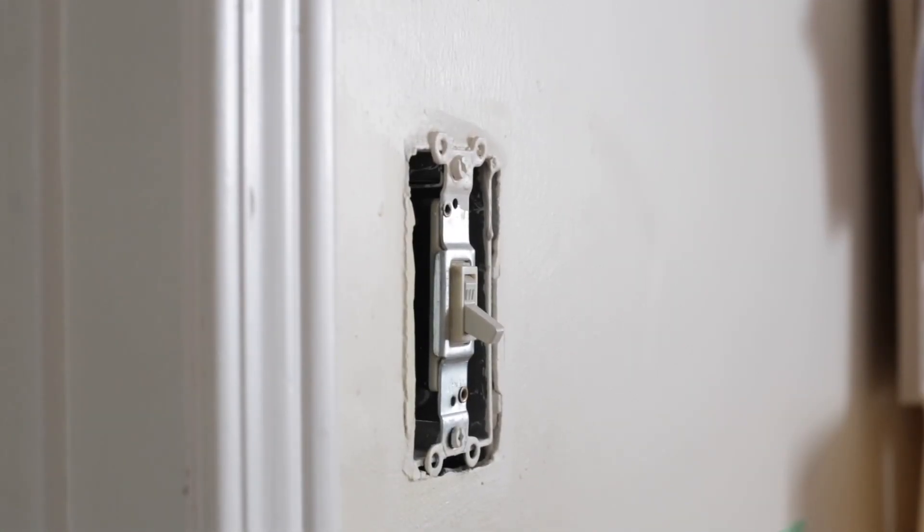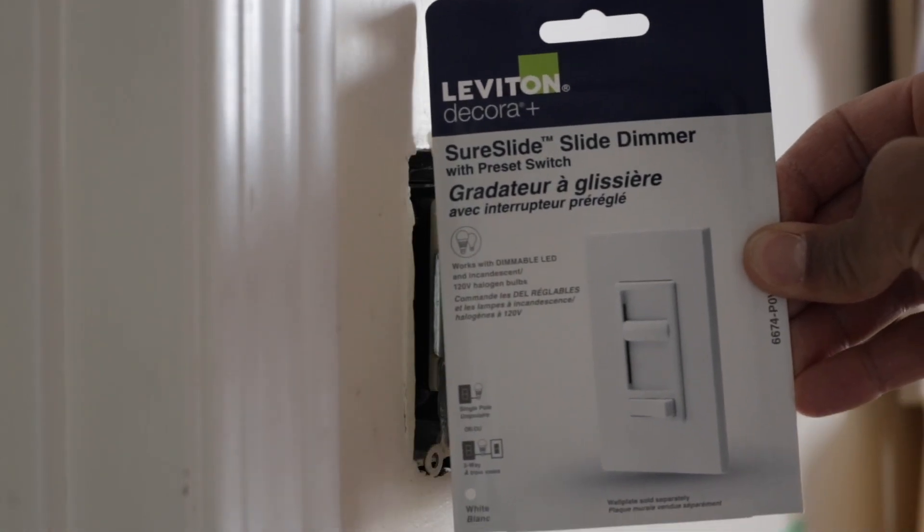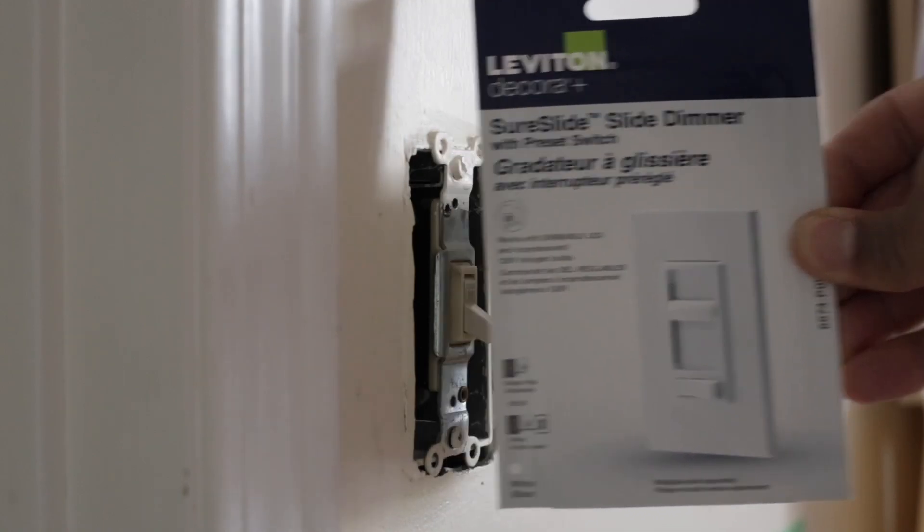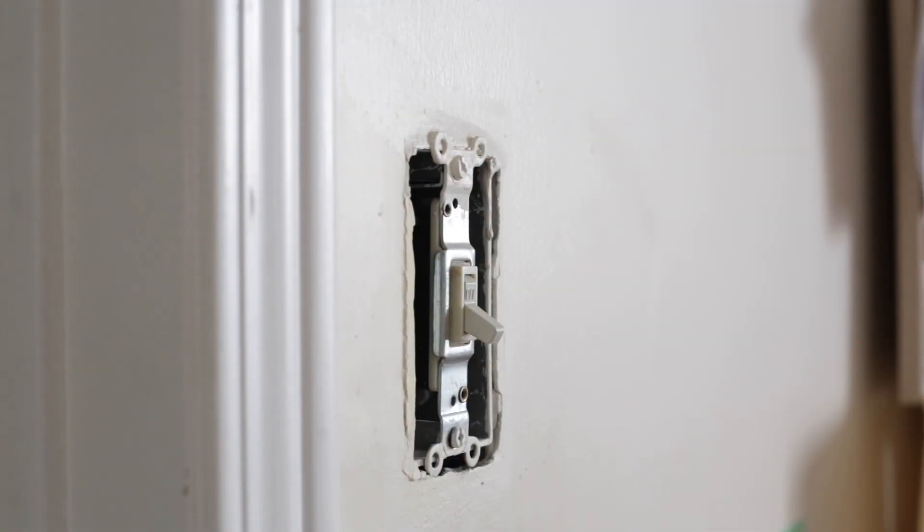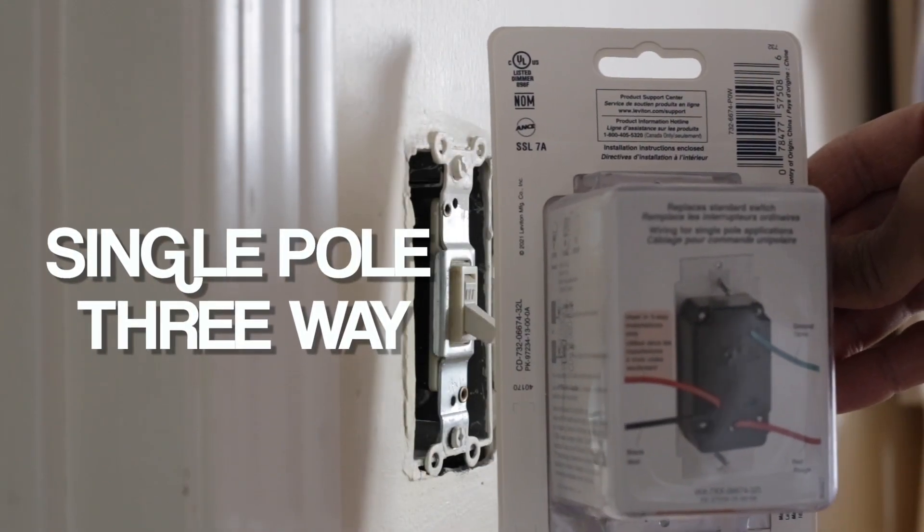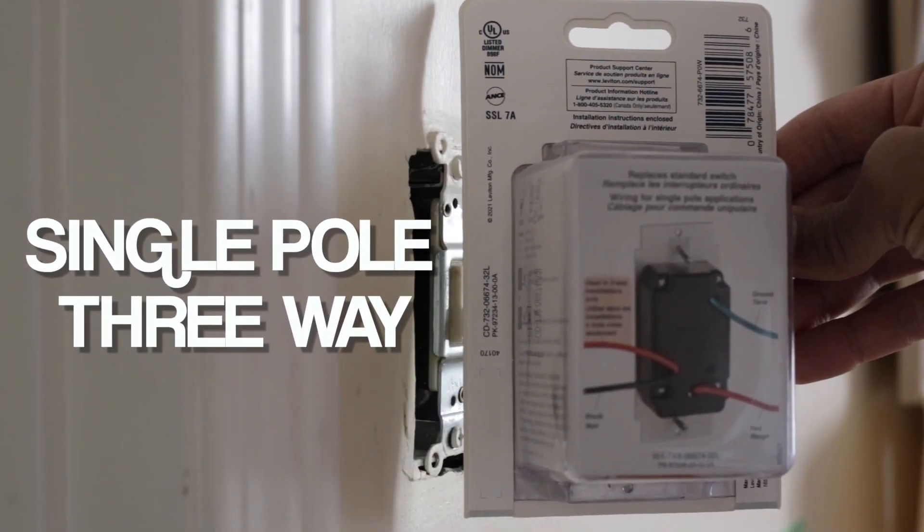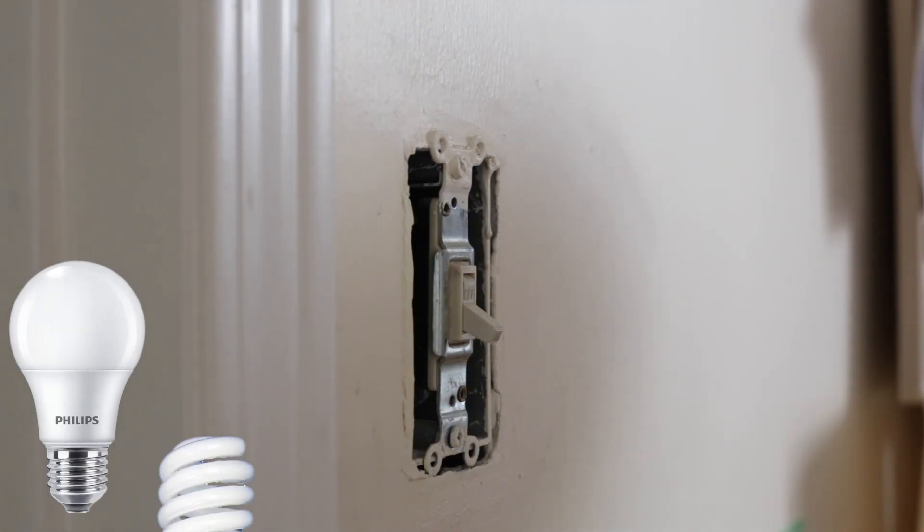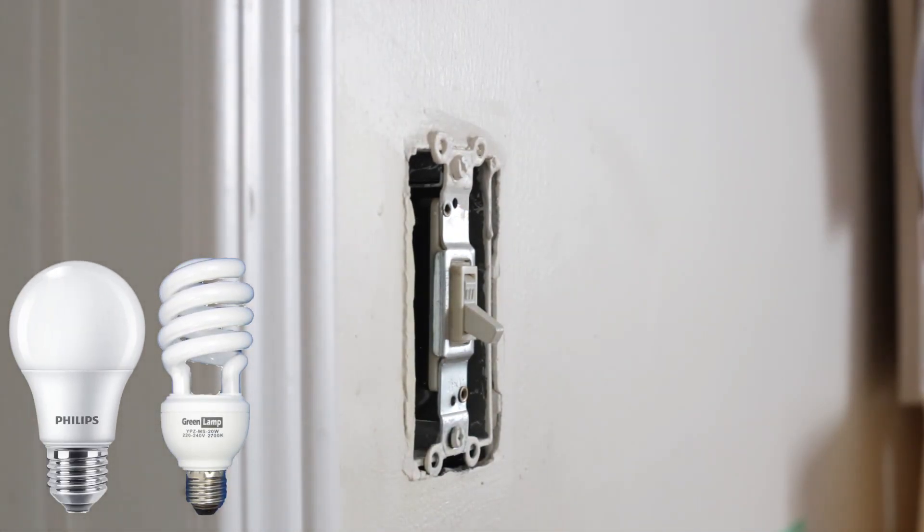So the one I ended up getting was a Leviton Decora SureSlide slide dimmer with preset switch. This has four wires coming out of it because you can use it in a single pole application or a three-way application. You can use it on dimmable LED bulbs or compact fluorescent, which I think they refer to as CFL bulbs too, and of course incandescent.